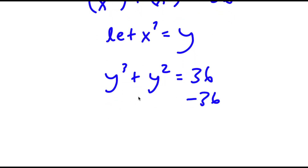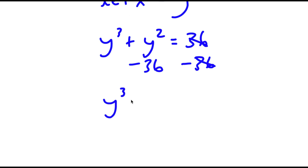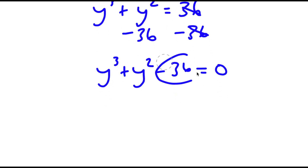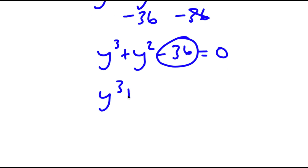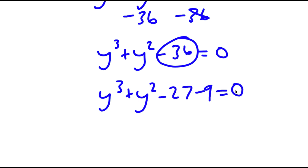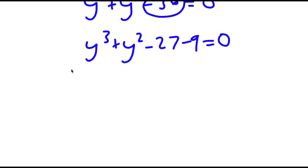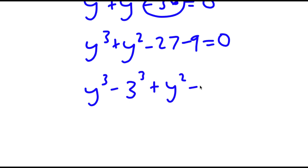Subtracting 36 on both sides, I get y cubed plus y squared minus 36 is equal to 0. I can rewrite negative 36 as negative 27 minus 9, giving me y cubed minus 3 cubed plus y squared minus 3 squared is equal to 0.